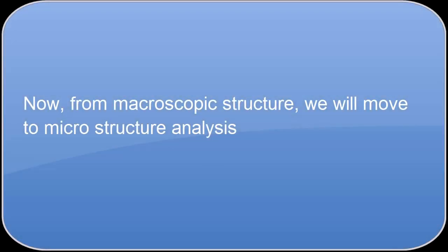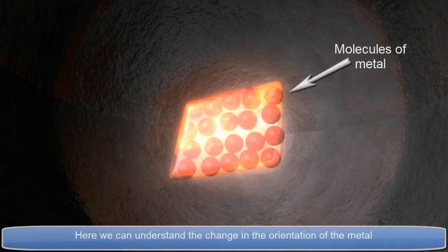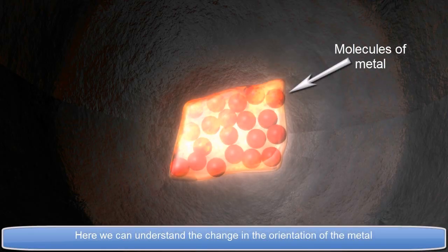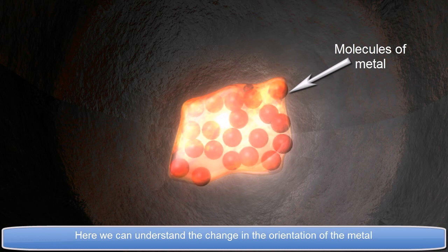Now, from macroscopic structure, we will move to microstructure analysis. Here, we can understand the change in the orientation of the metal.